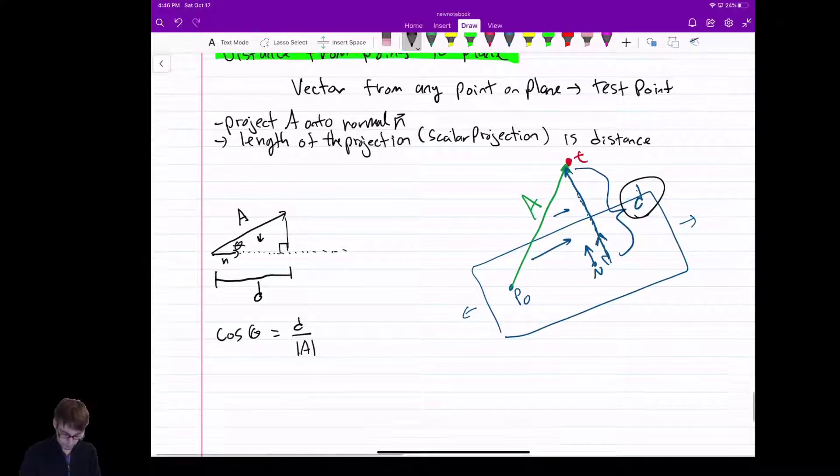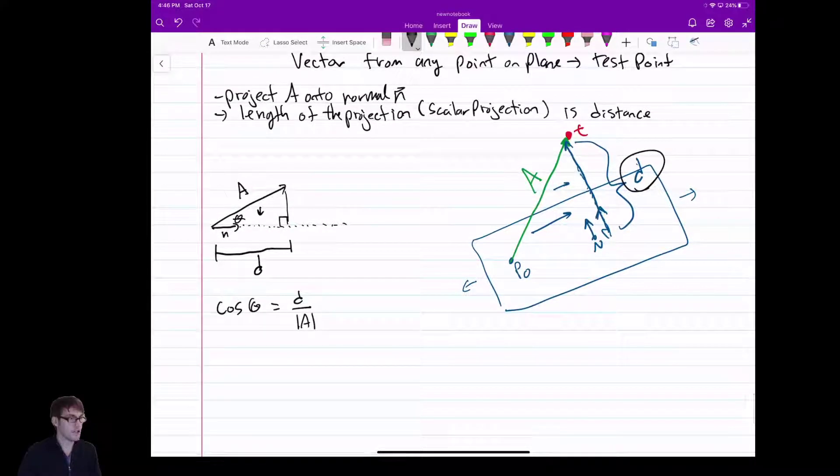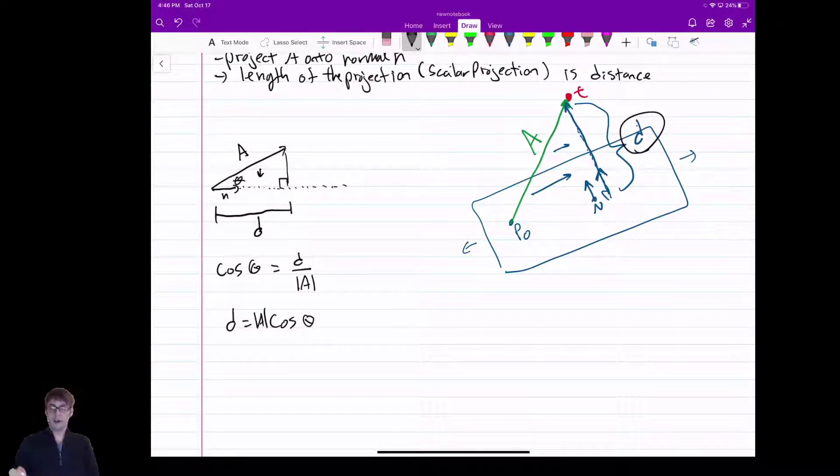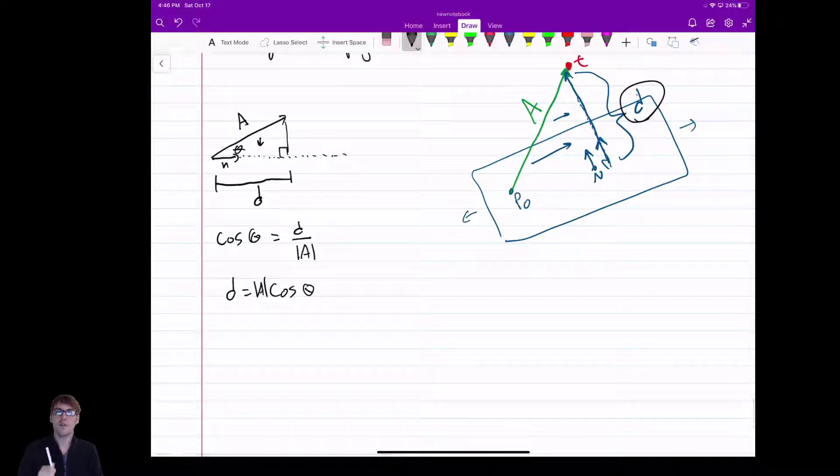And then we can just simply rearrange this to say, well, I want to solve for D. So my D is going to be cos theta times the length of A. Now, it's actually not hard, but we can even make it simpler. The length of A times the cosine will give us what we want. But we can actually make this simpler. Whenever you see a cosine, you should be thinking dot product.